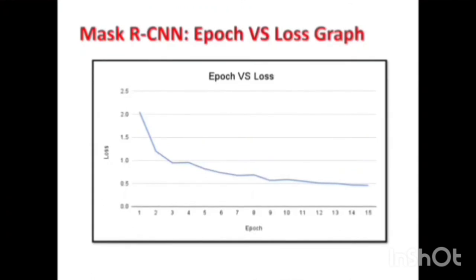Looking at the epoch versus loss graph for Mask RCNN, as we increase the number of epochs, the loss decreases. At the 15th epoch, the training loss is nearly 0.5%.